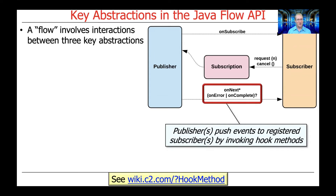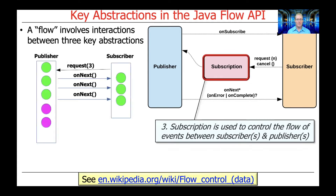The publishers push events to subscribers by various so-called hook methods. A hook method is a virtual method call that can be overwritten and provide behavior that can be customized in a runtime context in an object-oriented environment. These three methods are on-next, on-error, and on-complete. There's also a subscription abstraction used to control the flow of events between subscribers and publishers — the idea is that the subscriber can indicate to the publisher how many events it can consume, to prevent fast publishers from overwhelming the processing resources of slower subscribers.